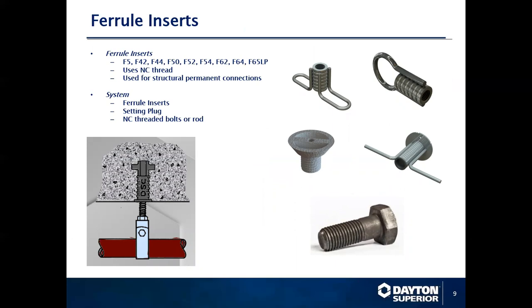Ferrule inserts are typically seen with NC threads for use with pipe hangers, permanent anchors in a wall, ledger brackets, etc. They are very good for those applications because they can be tightened down, and once tightened down with an NC thread, it is very difficult to get them to vibrate loose.